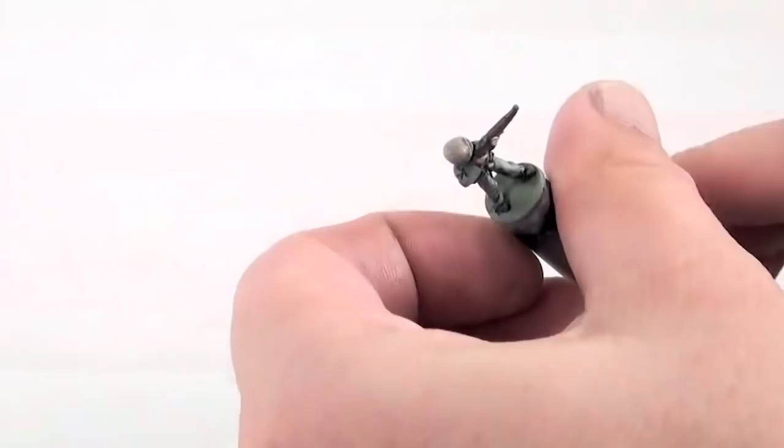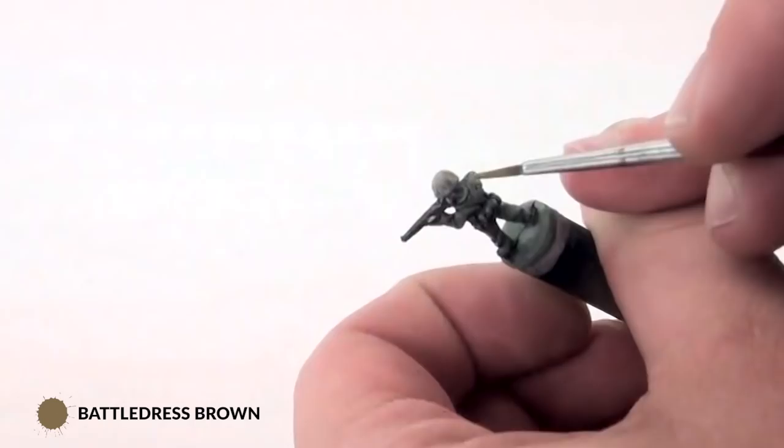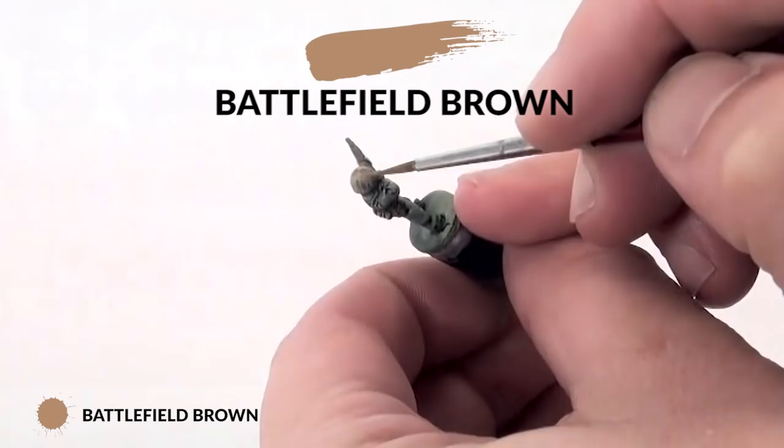So this is a slightly greener, darker brown than the wool brown. And again, five to seven spots is enough. And finally, the last camouflage color I put on is some more battlefield brown, in larger spots than the other two colors.